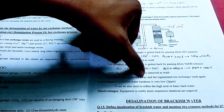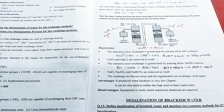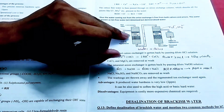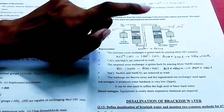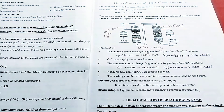The washings are thrown away and the regenerated ion exchanger will be used again. Then it will be washed completely and we will repeat the process. This process is the ion exchanger process — it will always work in the regeneration mode. This regeneration process will be used in industries.